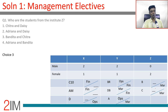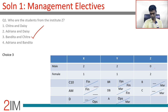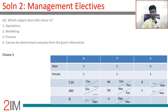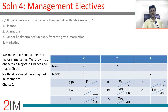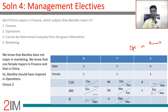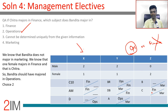Now for the questions. Who are the students from institute Z? That's Bandita and Chitra — an easy question. Which subject does Deb minor in? Deb minors in Finance — choice three. Which subject does Amit major in? Amit majors in Finance — choice three. If Chitra majors in Finance, which subject does Bandita major in? Since three females minor in Marketing and only one female majors in Finance, Bandita cannot also major in Finance, so Bandita must major in Operations — choice two.